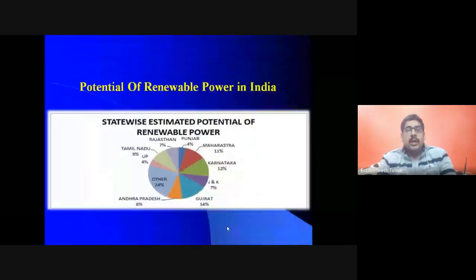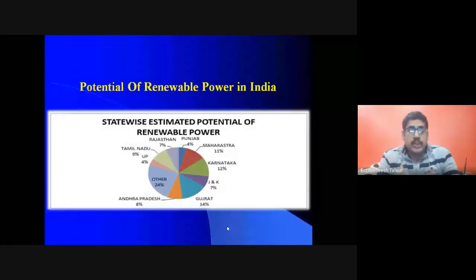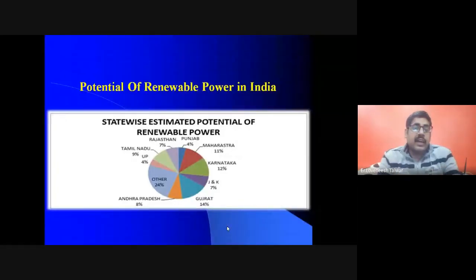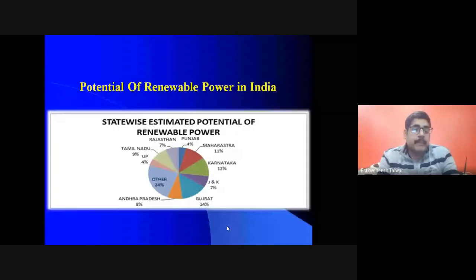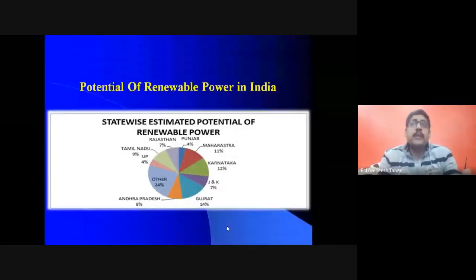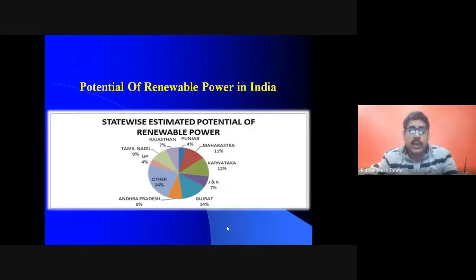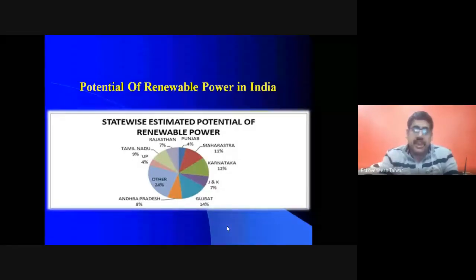This chart shows the potential of renewable power in India. Karnataka has a 12 percent share, J&K has 7 percent, Gujarat has 14 percent, and Andhra Pradesh has 8 percent. This is a state-wise estimated potential of renewable power, which can be harnessed from solar, wind, tidal, and other sources.